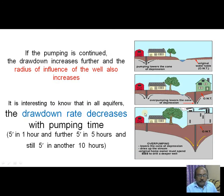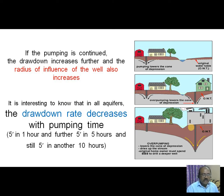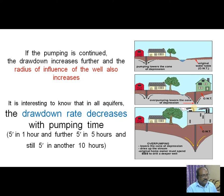If the pumping is continued, the drawdown increases further and further, and the radius of influence also increases. It is interesting to know that in all aquifers, the drawdown rate decreases with pumping time. For example, 5 feet in 1 hour, and further 5 feet in 5 hours, and still 5 feet in another 10 hours — in such a way the drawdown rate decreases.